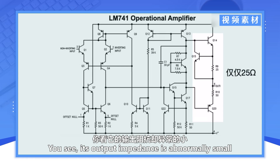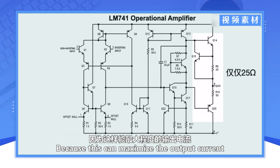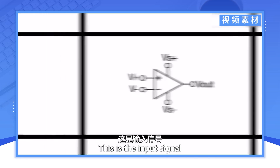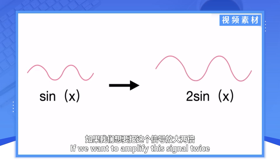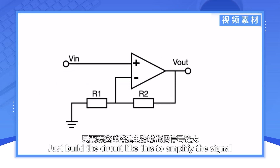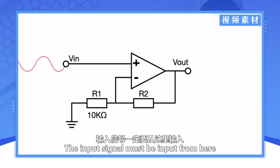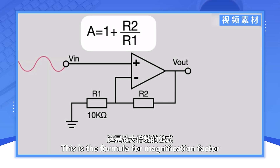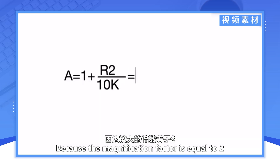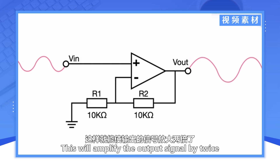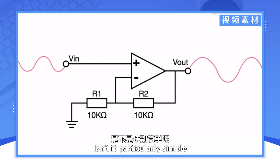You see, its output impedance is abnormally small, because this can maximize the output current. Let's talk about how to apply it. This is the input signal. If we want to amplify this signal twice, just build the circuit like this. R1 equals 10K ohms. The input signal must be input from here. This is the formula for magnification factor, because the magnification factor is equal to 2. So, finding R is also 10K ohms. This will amplify the output signal by twice. Isn't it particularly simple?